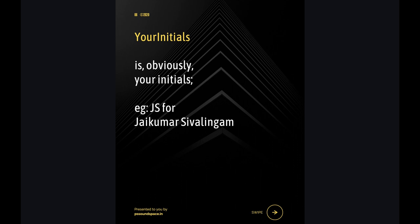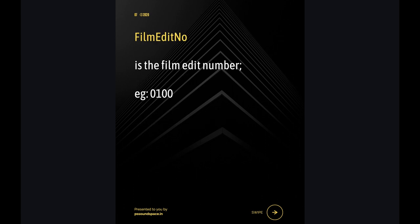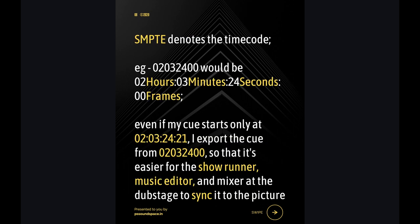Your initials — I generally keep it as JS as it implies my name. Then comes the film edit number. SMPTE denotes the timecode. Even if my cue starts only at 02:03:24:21, I export the cue from 02:03:24, so that it's easier for the showrunner or the music editor and the mixer at the dub stage to sync it to the picture.